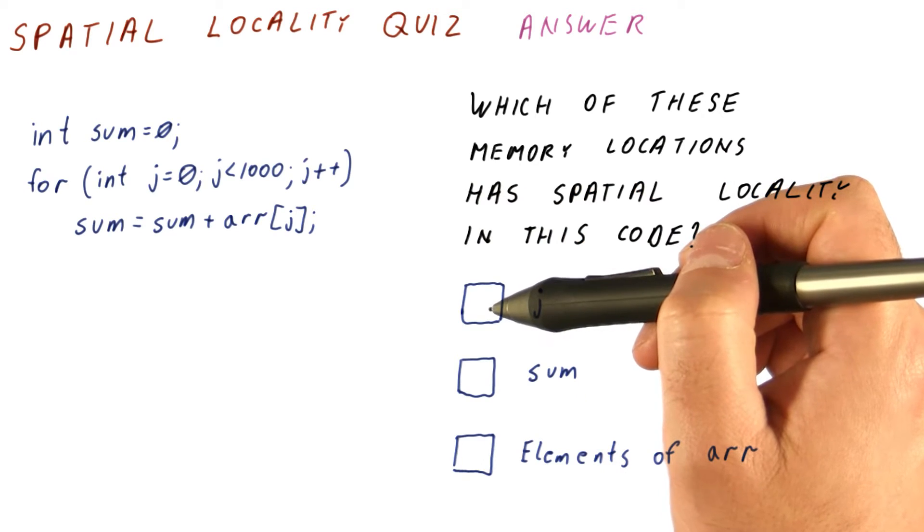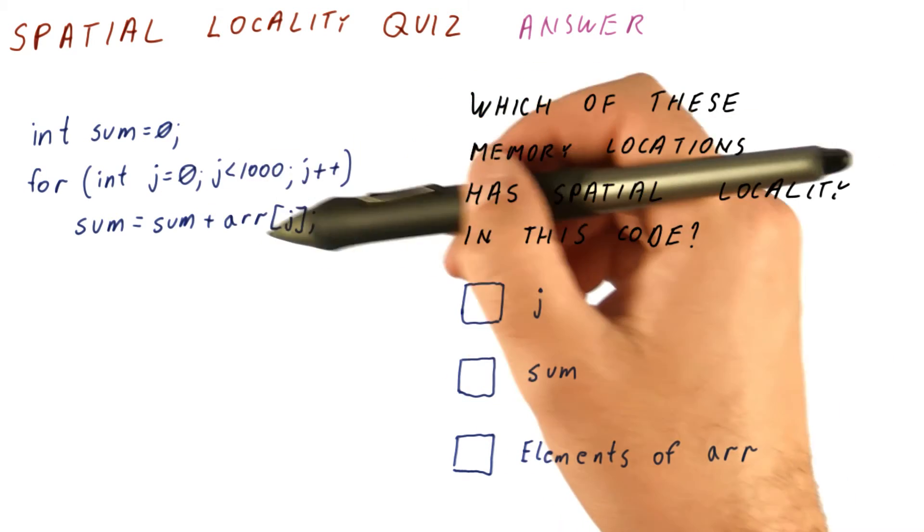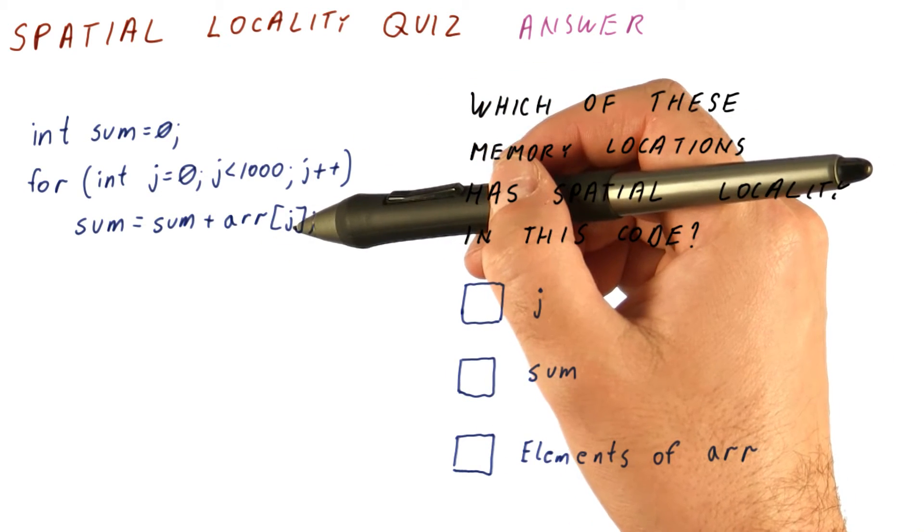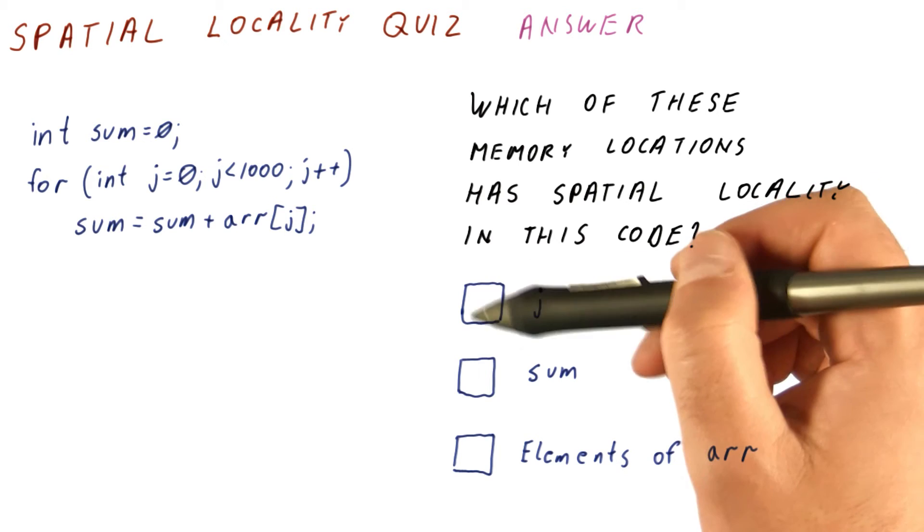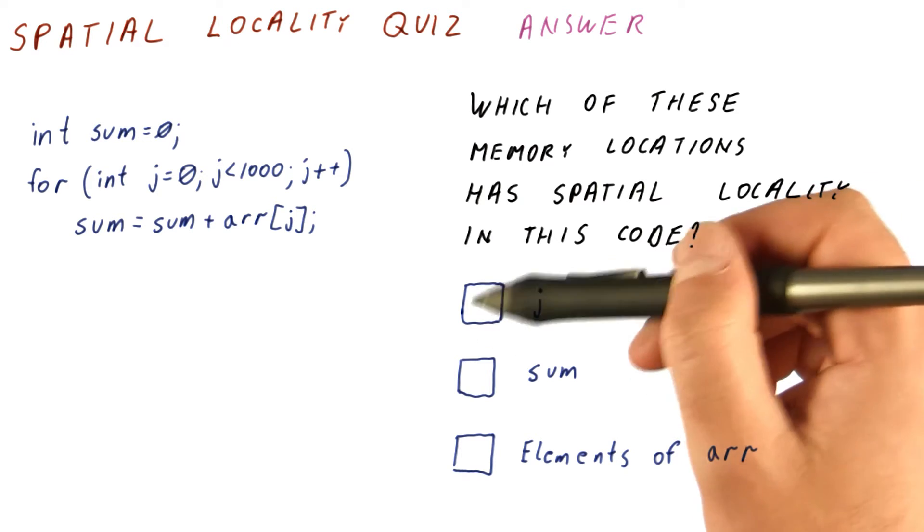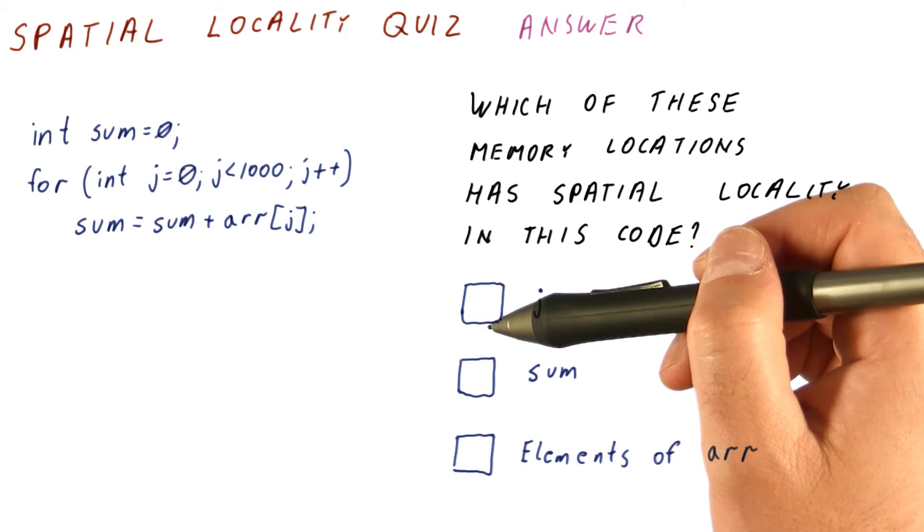For the variable j, we keep repeatedly accessing j, but we don't know what's close to j, so we cannot say that j has spatial locality. If we access j, there is a lot of temporal locality, but not necessarily any spatial locality.